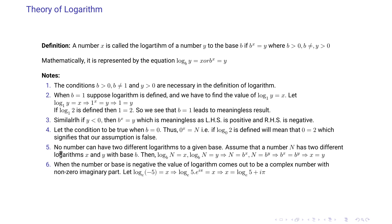The fifth point is that no number can have two different logarithms to a given base. Assume a number n has two different logarithms x and y, so log of n with base b equals x and log of n with base b equals y. Then n equals b to the power x and n equals b to the power y, which means b to the power x equals b to the power y, so x equals y. Therefore numbers with the same logarithm to a given base must be equal.